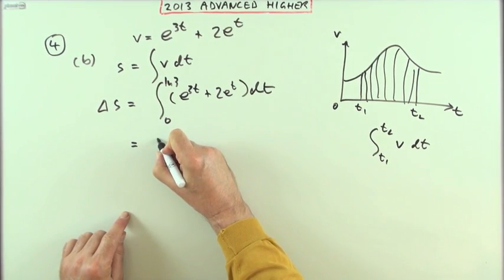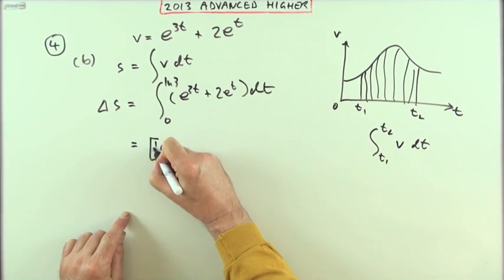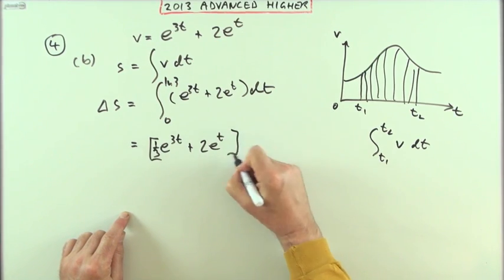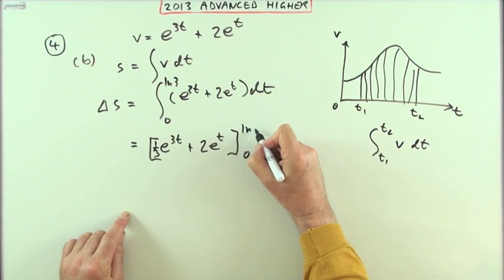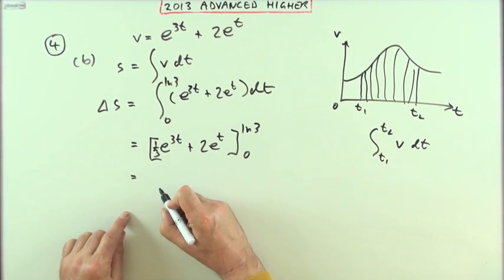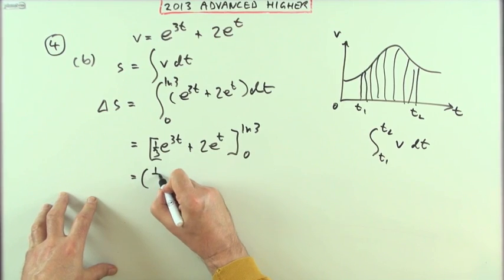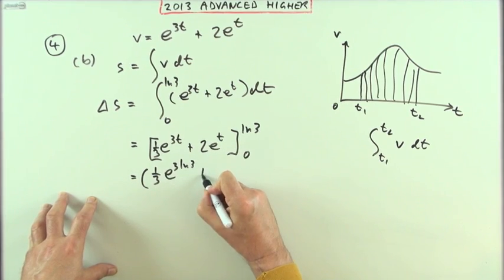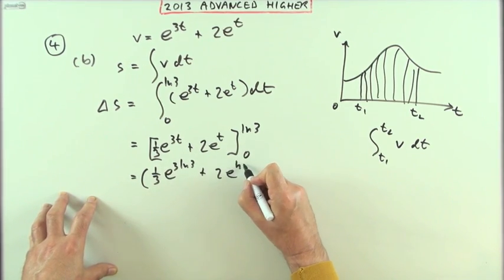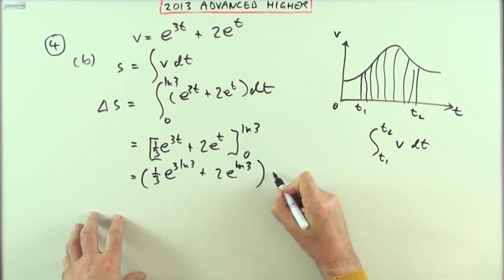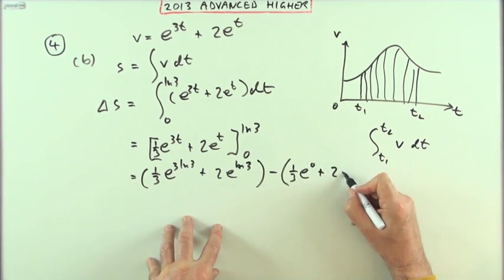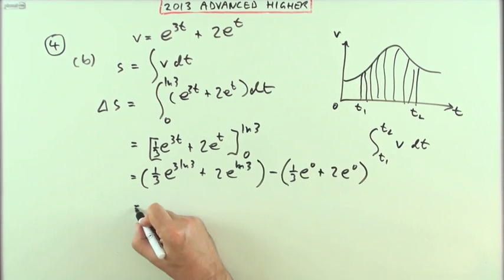Well that's what we're going to have here. So that will be one third of e to the three t plus two e to the t evaluated from zero to ln3, of course this is just the same as before, which will be one third of e to the three ln3, plus two e to the ln3, minus one third of e to the zero, plus two e to the zero, which of course comes the same thing as before.